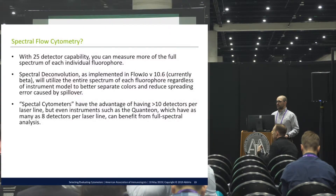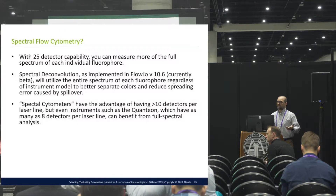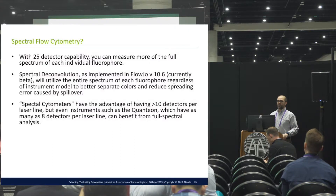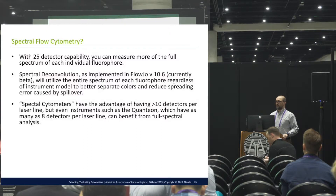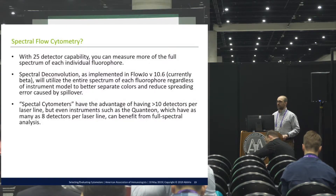The importance of that is it actually improves your data. FlowJo version 10.6, currently in beta — you can sign up for a beta trial — lets you take fluorescence data from any instrument, as long as you have more detectors collecting data than you have single-stained controls. You just check a button saying you want to do spectrocytometry; it's the same interface you're used to. Then you can spectrally deconvolute your samples instead of doing regular compensation.